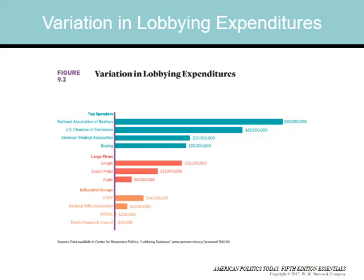Some influential groups such as the U.S. Chamber of Commerce spend hundreds of millions of dollars a year, but many other influential groups such as NARAL and the Family Research Council spend relatively little. How can groups have influence over government policy despite spending almost nothing on lobbying? It's a matter of membership participation — they have their members do it.